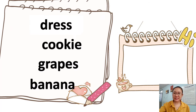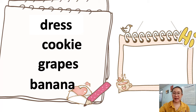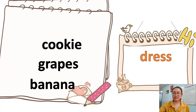Dress, cookie, crepe, and banana — which one is different? Can you tell me? Cookie, crepe, and banana are food, but dress isn't. So dress is different. Well done!